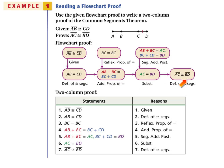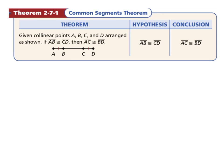If you are given a flowchart proof, all you do is follow the flowchart and write everything down in a two-column proof. We just proved theorem 2-7-1, the common segments theorem.